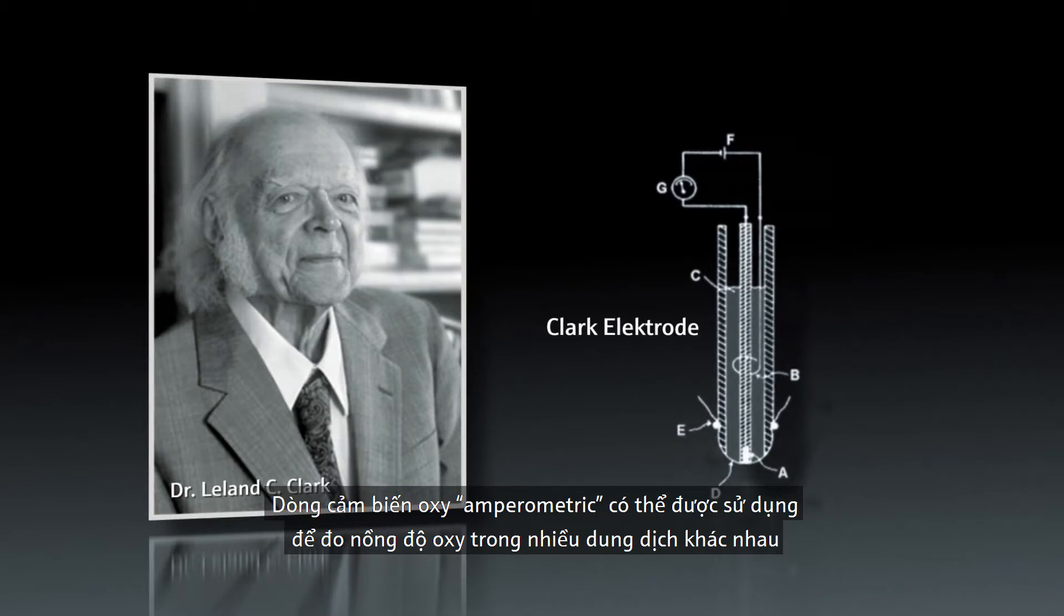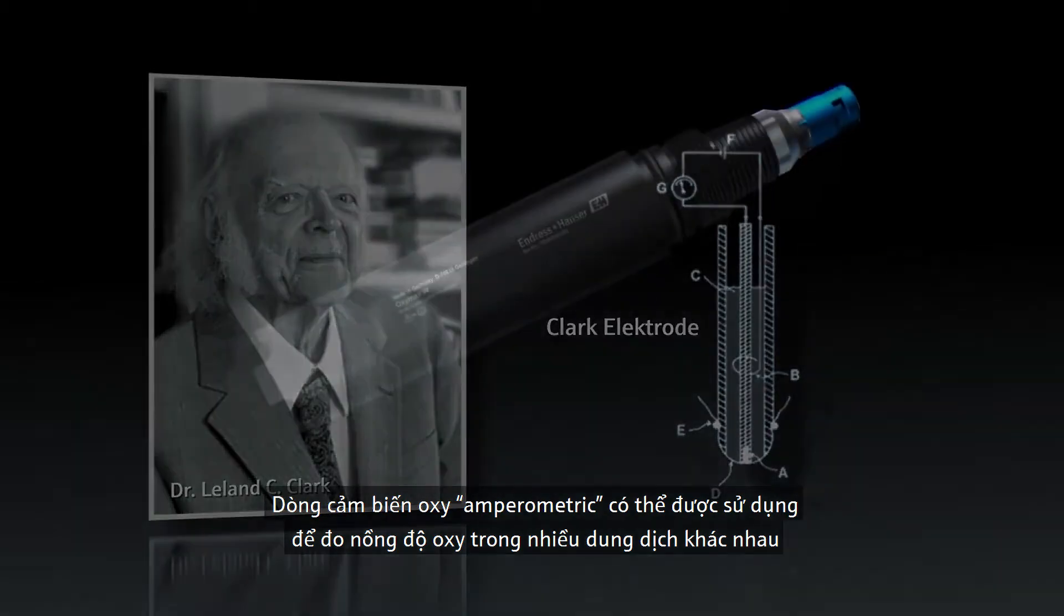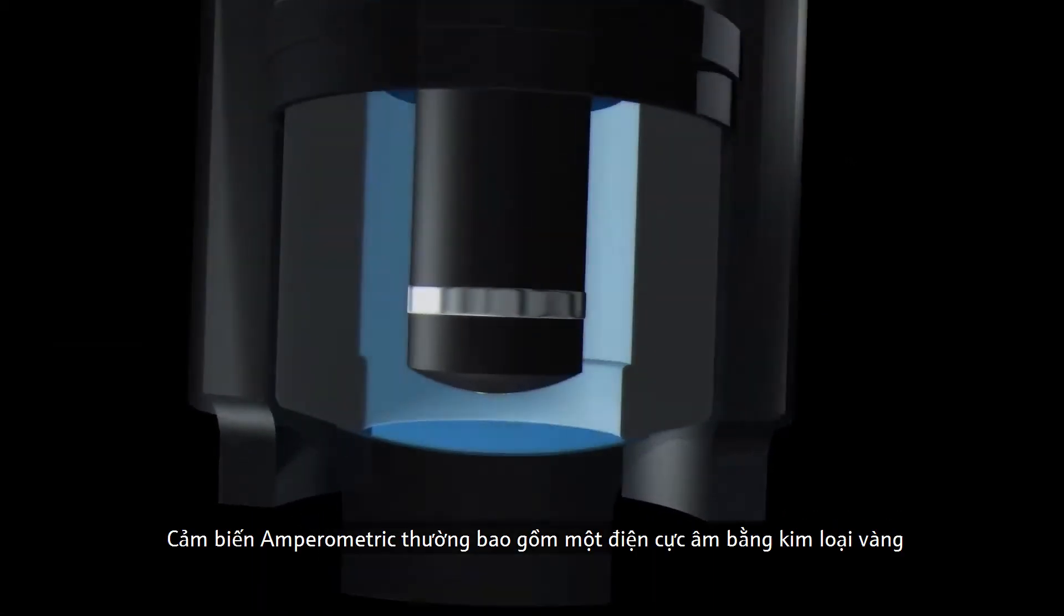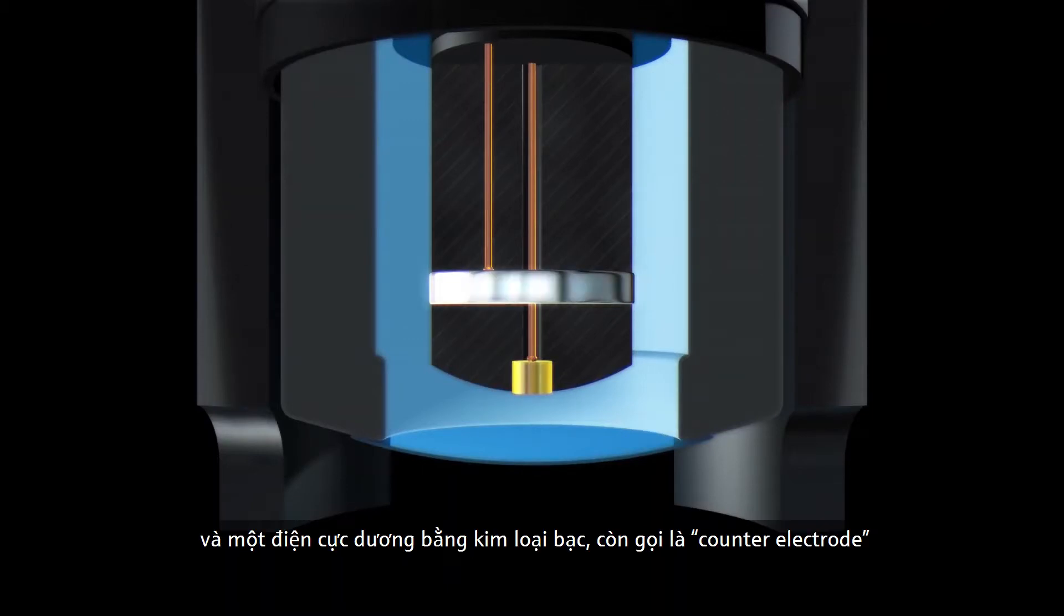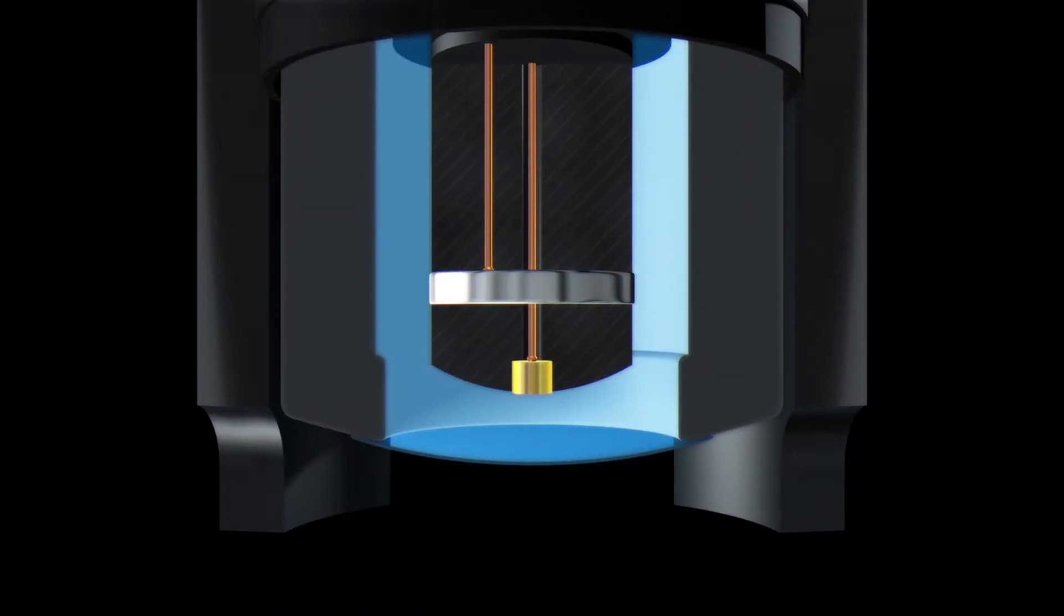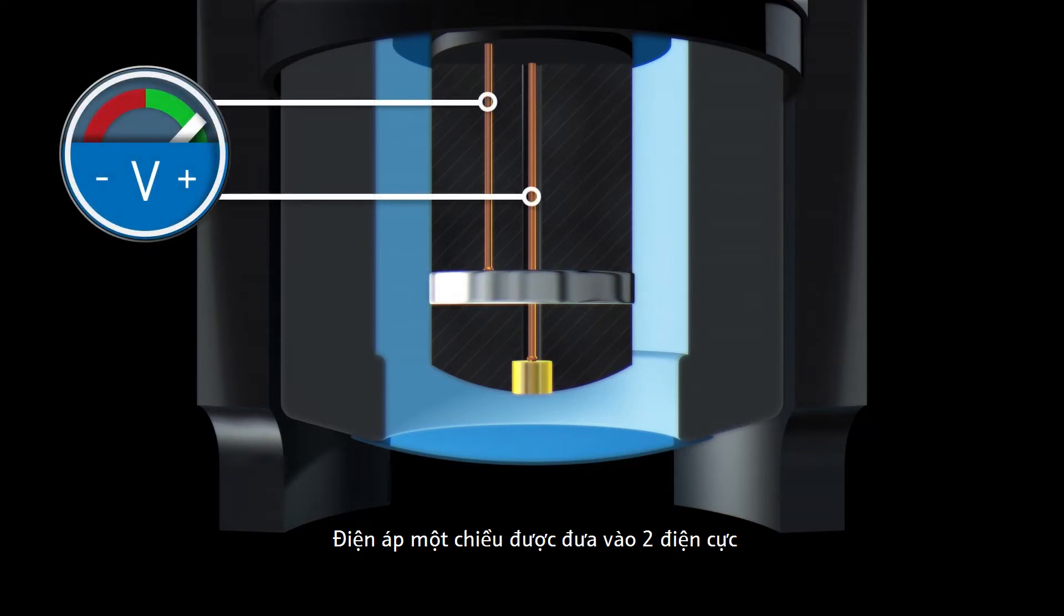An amperometric sensor usually consists of a gold cathode, also called working electrode, and a silver anode, the counter electrode. A DC voltage is applied to both electrodes.